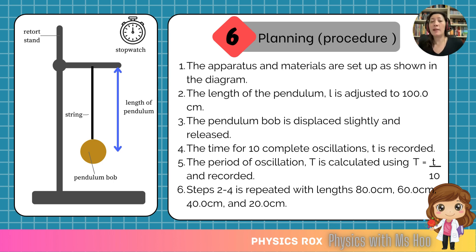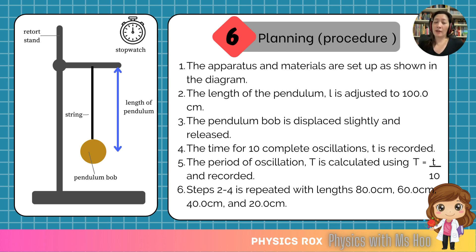Next, we need to plan the procedure of the experiment. Remember that we need to be able to conduct this in the lab. The first thing we should do is set up the apparatus and materials — so at step one, the apparatus and materials are set up as shown in the diagram. A picture paints a thousand words, and for physics, the setup can be a little complicated, so we have a diagram to show the setup, which is much easier than writing out the entire description.